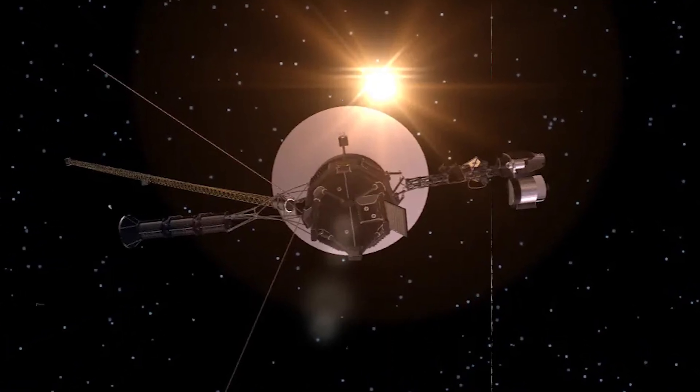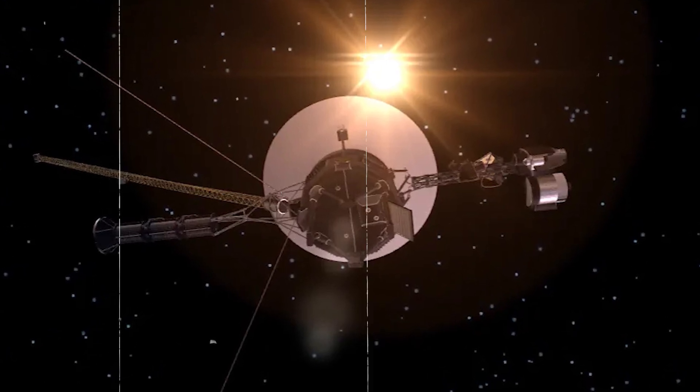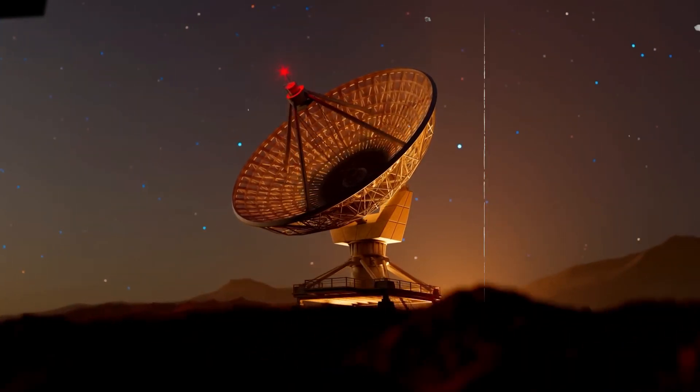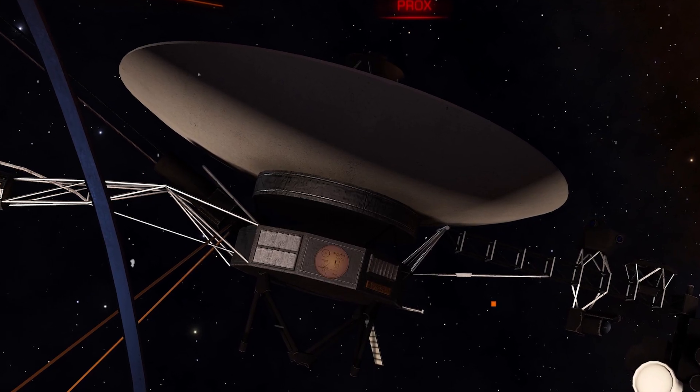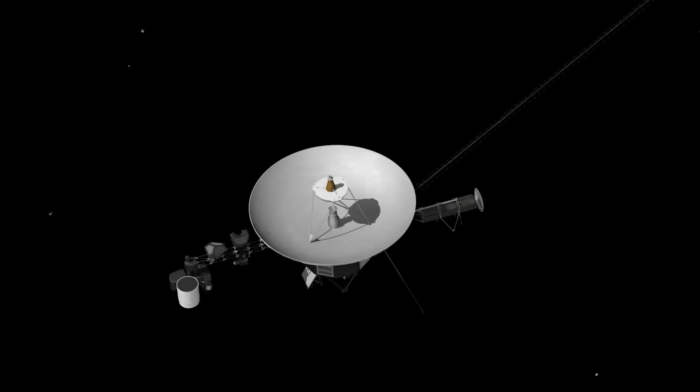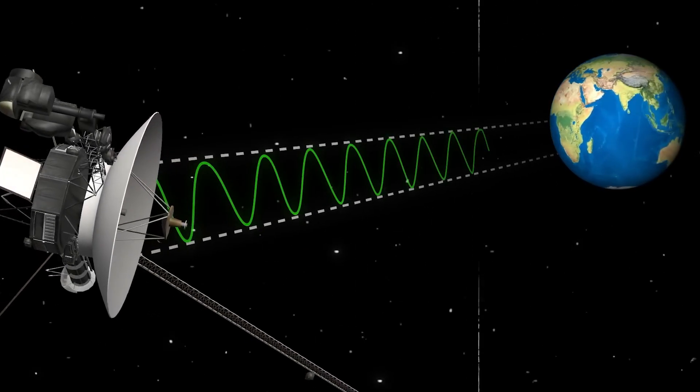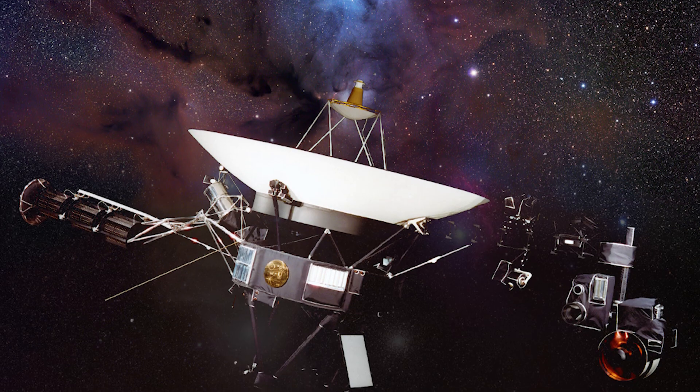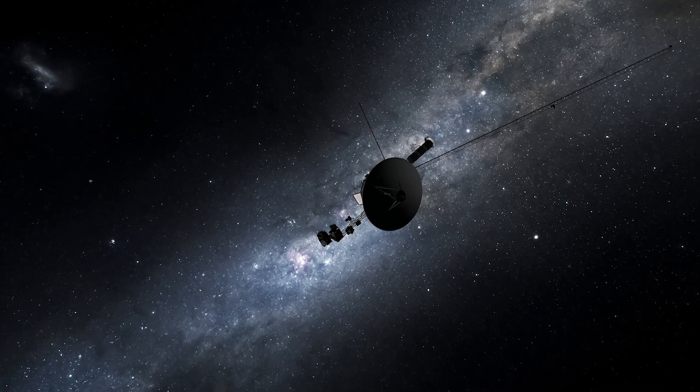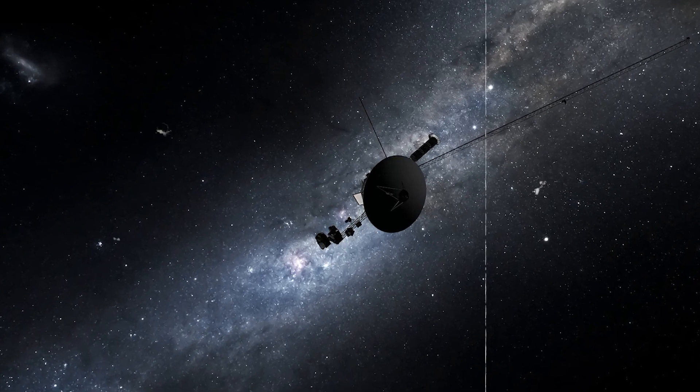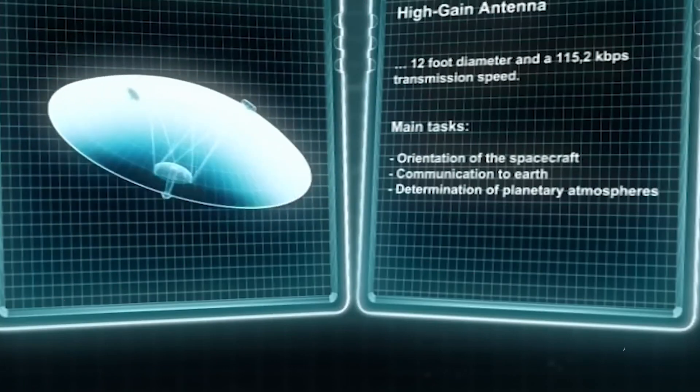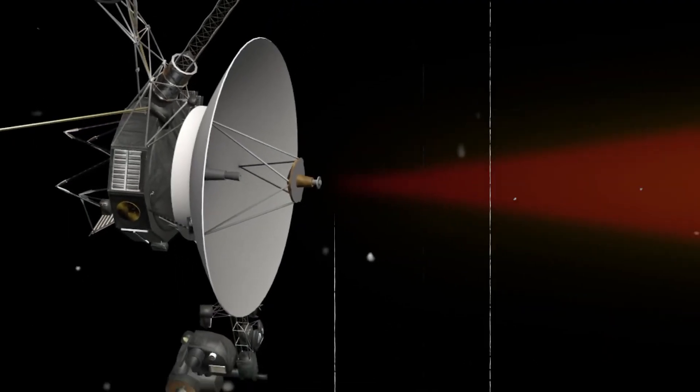After intricate adjustments to integrate and relocate software code sections within Voyager 1's memory, the team successfully restored monitoring capabilities by April 20th. This achievement follows a five-month period of work to ensure the spacecraft systems function harmoniously. Voyager 1's mission holds immense scientific value as it explores the outer reaches of our solar system and enters interstellar space, providing unprecedented insights into cosmic phenomena. Despite the complexities of maintaining communication across vast distances, where signals take significant time to travel, the spacecraft continues its trajectory.